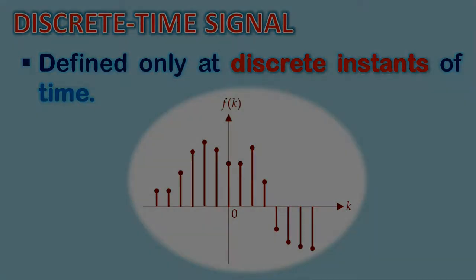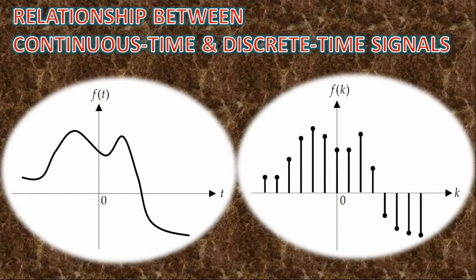Now look at this figure. This figure illustrates a relationship between a Continuous Time Signal and a Discrete Time Signal. By sampling the Continuous Time Signal at a uniform rate, one may derive the discrete version of the signal. Here, the symbol T has been used to denote time in case of the Continuous Time Signal, while the symbol K has been used to denote time instants in case of the Discrete Time Signal.